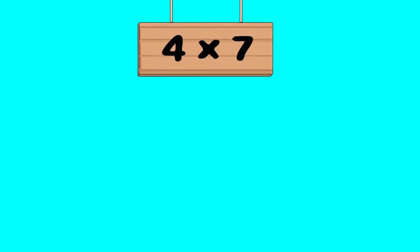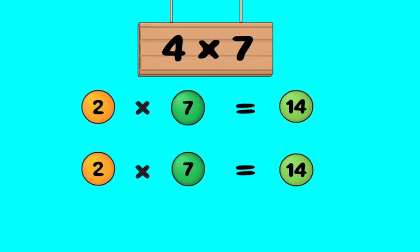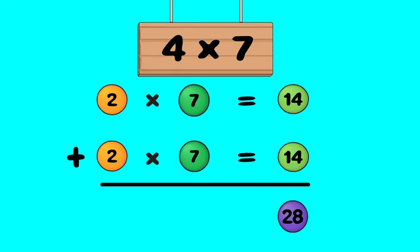Does four times seven look scary? Remember, the four times facts are double two times facts. So four times seven is double two times seven. Two times seven is fourteen. Double fourteen is twenty-eight, so four times seven is twenty-eight.